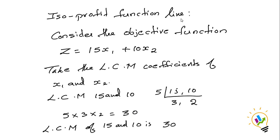For the ISO profit function line, consider the objective function Z equal to 15X1 plus 10X2. Take the LCM of the coefficients of X1 and X2. The LCM of 15 and 10 is 30.